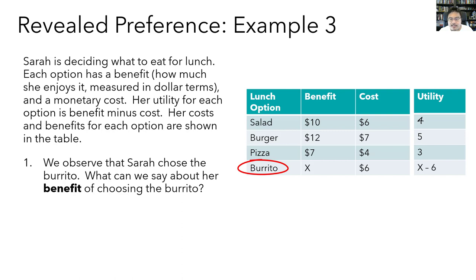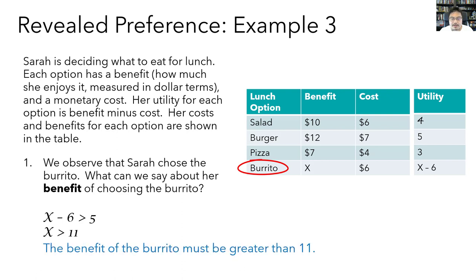Since Sarah chose the burrito, the burrito must have the highest overall utility, meaning it must be greater than the best alternative — the burger at utility 5. So x minus 6 must be greater than 5. Adding 6 to both sides, x must be greater than 11. The benefit of the burrito has to be greater than 11. This is an example of how we can apply revealed preference to learn about people's preferences from their choices.